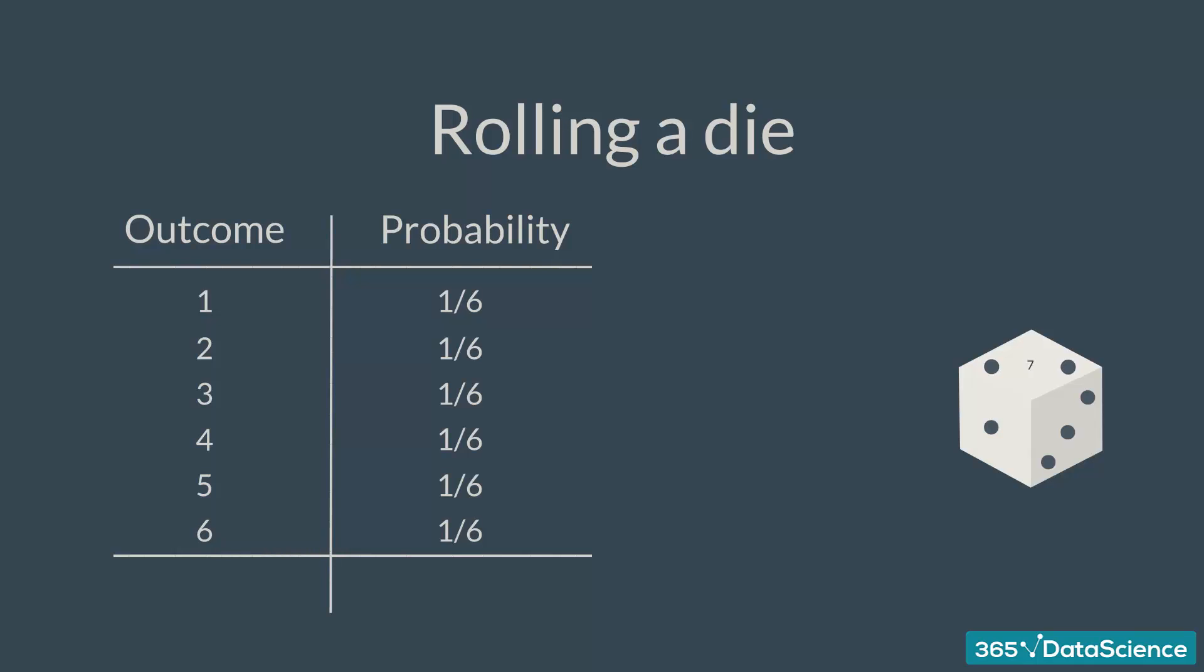Now, what is the probability of getting a seven? It is impossible to get a seven when rolling a die. Therefore, the probability is zero.